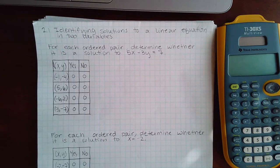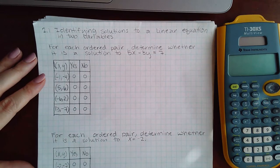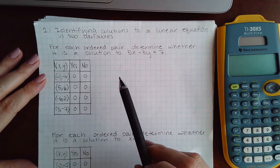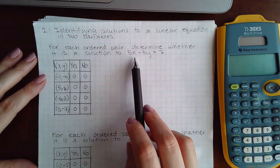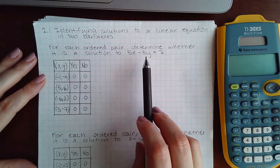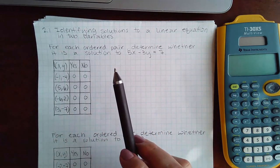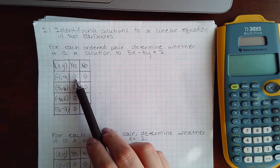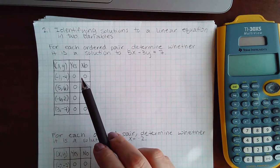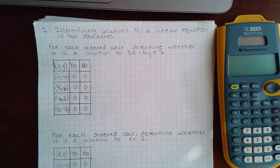In this video, we will be covering 2.1, identifying solutions to linear equations in two variables. Essentially, what you need to do is take the values that they give you and plug them into the equation that they give you. If the statement is truly equivalent, then the answer is yes. But if you end up with a statement that is not equivalent, then you answer no. So let's see what that looks like.